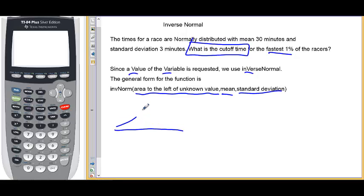So if I draw a picture of this just to give us a better idea, bell curve with a mean of 30, somewhere down here is a cutoff point for the fastest 1% because they're taking less than the average amount of time. They're taking an unusually small amount of time. They're fast.